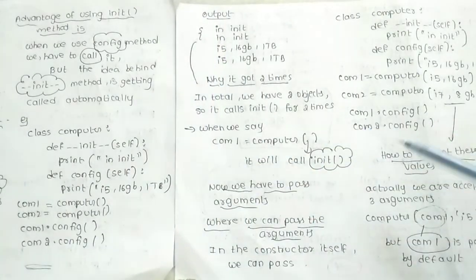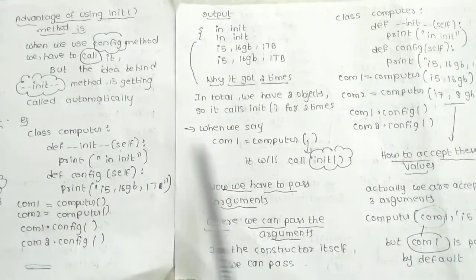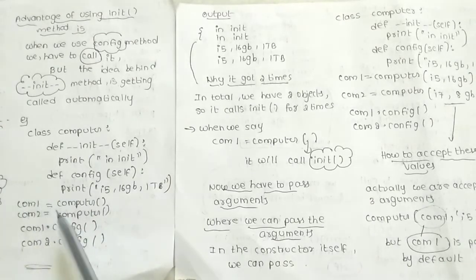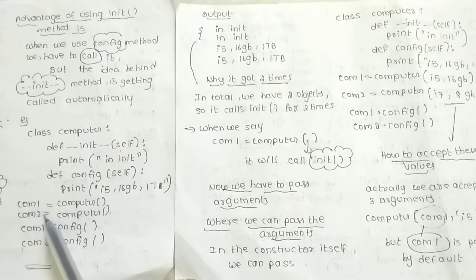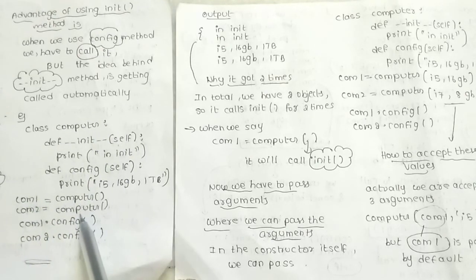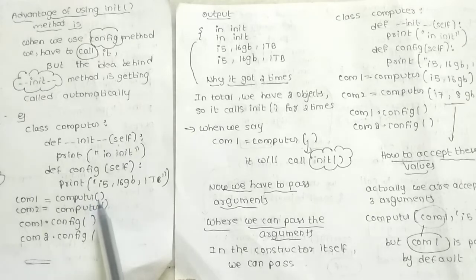Here we will use the config method with two objects. So object comp1 and comp2 are now objects. These objects are of the Computer class.